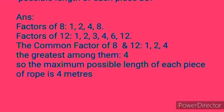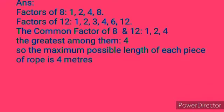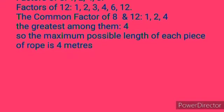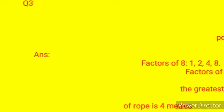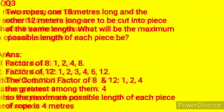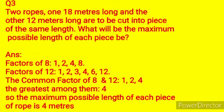Students, we find the HCF of 8 and 12 first. Factors of 8: 1, 2, 4, 8. Factors of 12: 1, 2, 3, 4, 6, 12. The common factors of 8 and 12 is 1, 2, 4. The greatest among them is 4. The maximum possible length of each piece of rope is 4 meters.